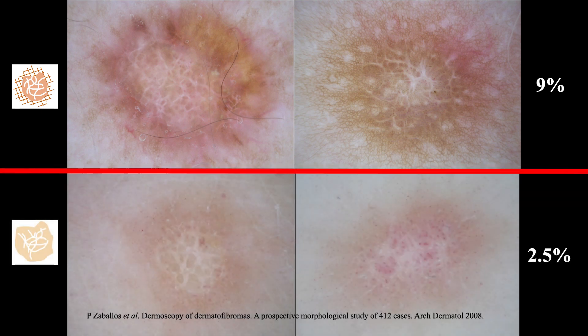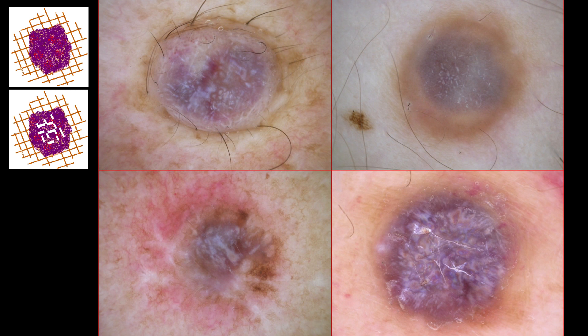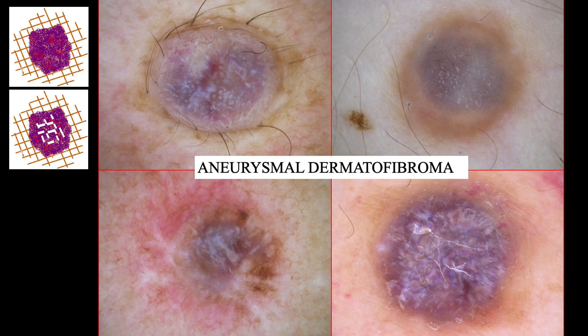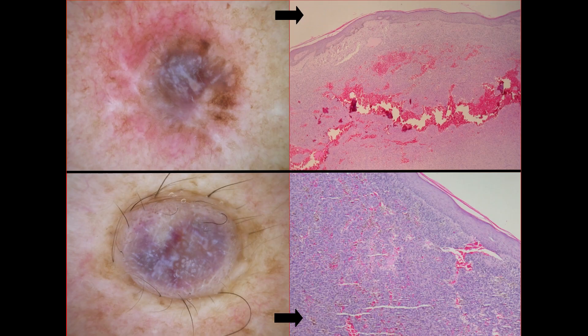We can also see a white network located throughout the lesion. In other cases of dermatofibromas, instead of the central white scar-like patch, we can observe a central red-bluish or red-violaceous homogenous pigmentation or structureless area, sometimes with chrysalis or white streaks, as we can see here. In our study, all dermatofibromas with this pattern were aneurysmal dermatofibromas. The histopathologic correlation of this structure could be the presence of prominent blood-filled spaces and intra- and extracellular hemosiderin deposits.